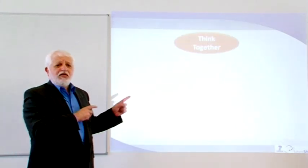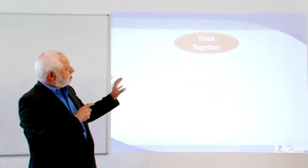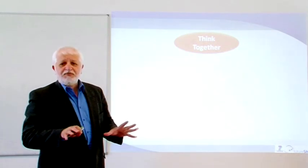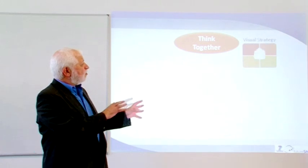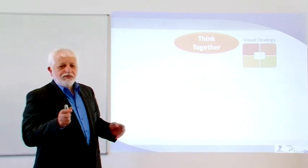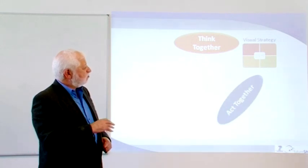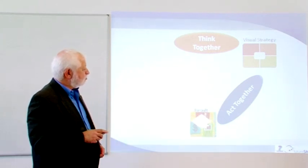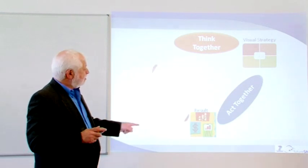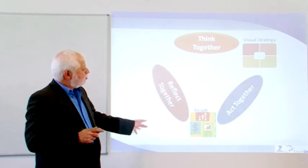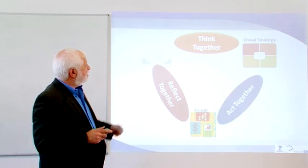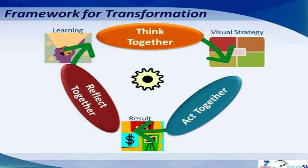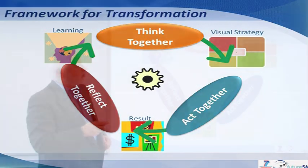If you remember, we talked about our framework for transformation. We said that we have to have thinking together. We spoke about it in previous videos on how to think together, big seven and collaborative decision making. Out of that comes visual strategy or plans. And the outcome of the visual strategy is used to act together. In other words, we execute the actions and the output of acting together becomes the results. Then we reflect on the results on both internal and external reality. And then we learn.